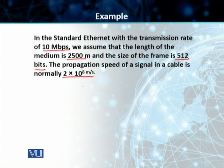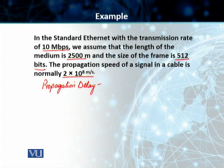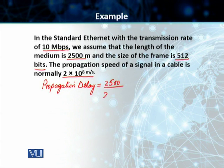We have been given the propagation speed, so the first thing we need to do is find the propagation delay. The propagation delay is equal to the length of the medium — 2,500 meters — divided by the propagation speed of 2 × 10⁸ meters per second. Doing the math, the propagation delay comes out to be 12.5 microseconds.